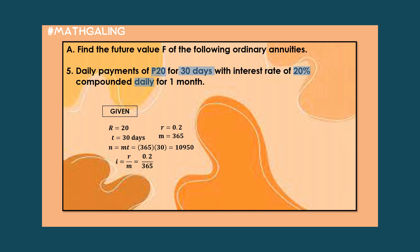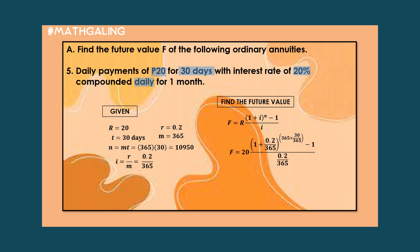The value of I is a very long decimal, so we will just use the formula directly. Substituting into the future value formula, it is 20 times (1 plus 0.2/365) raised to the power of (365 times 30/365), minus 1, over (0.2/365). The answer is 604.79 pesos.